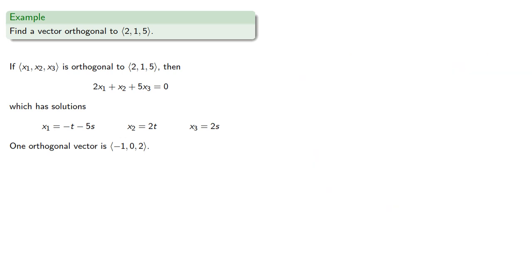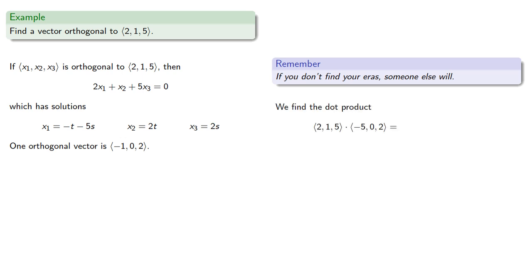It's useful to remember, if you don't find your errors, someone else will. So let's verify we actually have an orthogonal vector, and we can do that if we find the dot product, which will be—and so the vectors are definitely orthogonal.